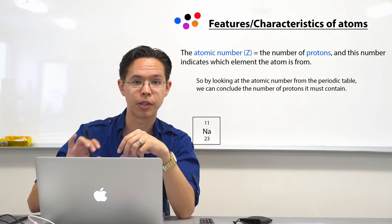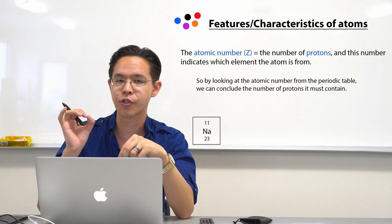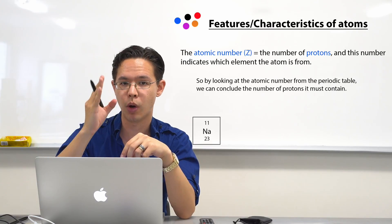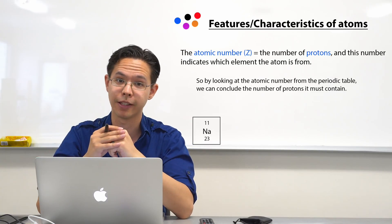Specifically, every element on the periodic table of elements has a unique atomic number, all the way from number 1 to 118, at least at the time of making this video.